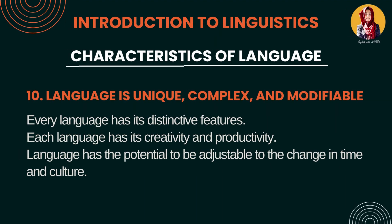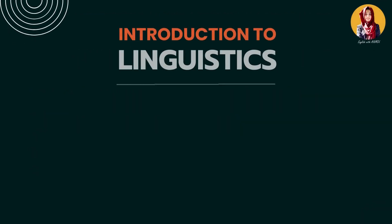Number 10: Language is unique, complex and modifiable. Language unique isliye hai kyunki har ek language kuch different features rakhti hai — pronunciation change ho sakti hai, vocabulary different ho sakti hai. Language is complex because each language is creative and productive — hum log simple se complex ki taraf ja sakte hain. And language is modifiable — language ko apne time ke mutaabiq aur apni needs ke mutaabiq change kiya ja sakta hai. Language is not constant — yeh dynamic hai, hum isko change aur adjust kar sakte hain.